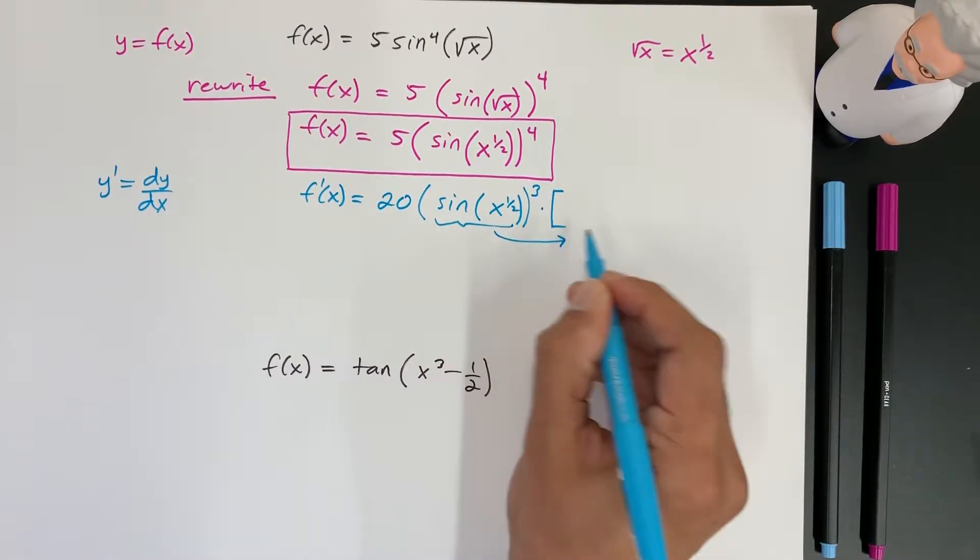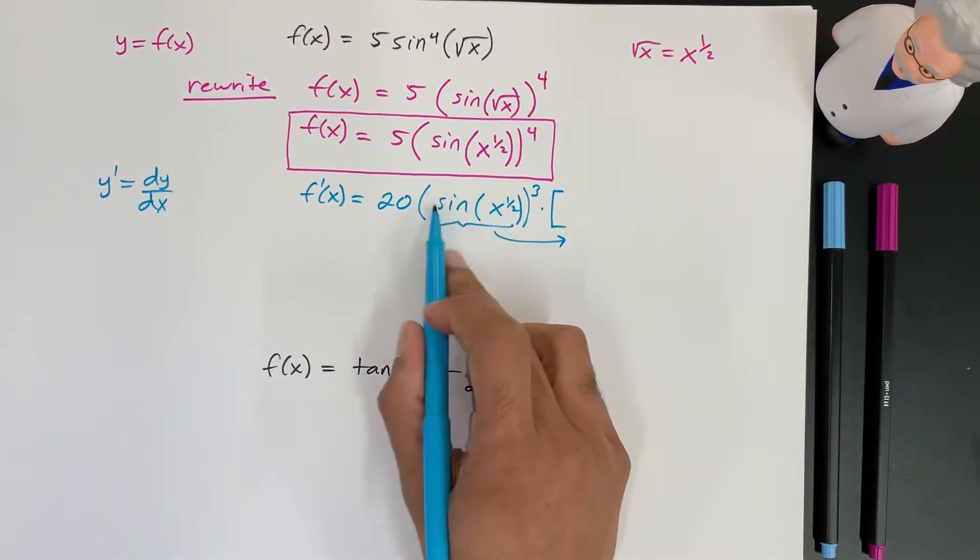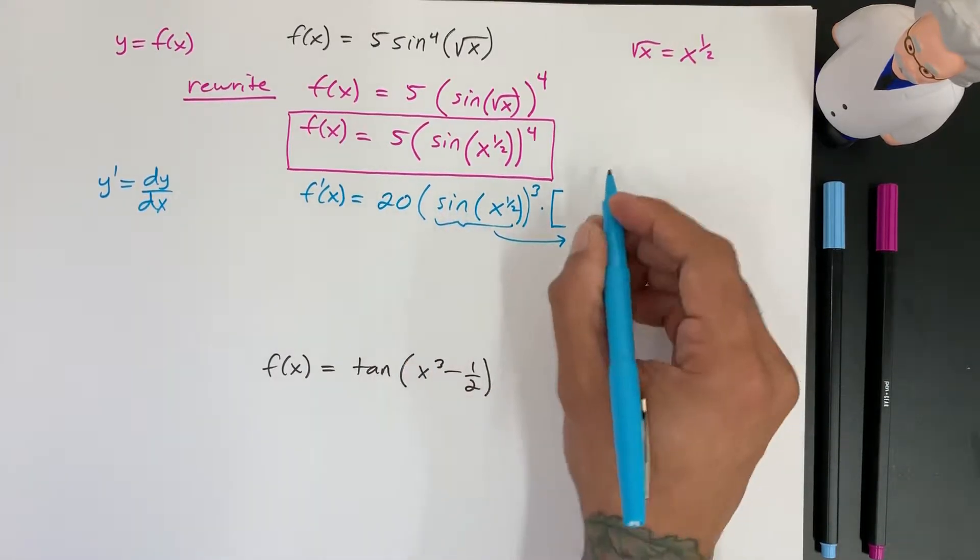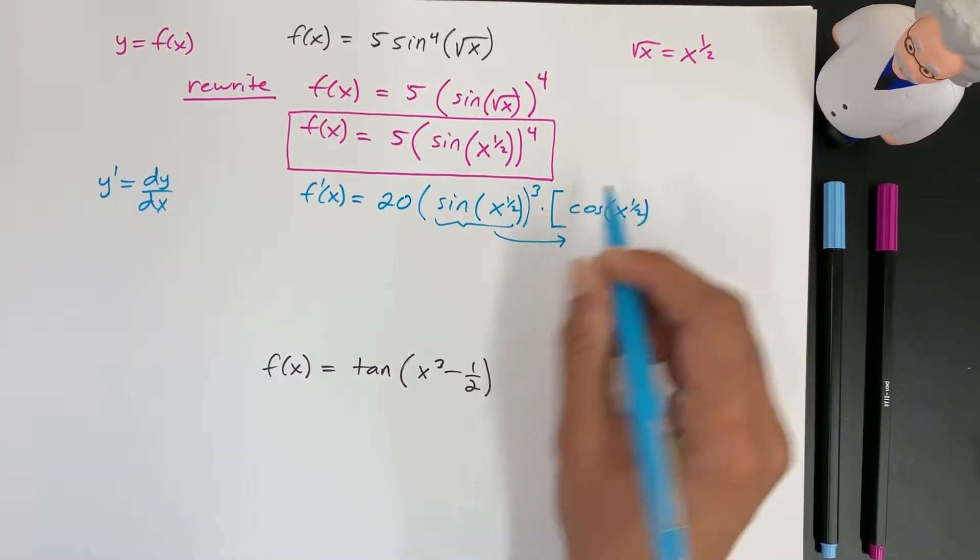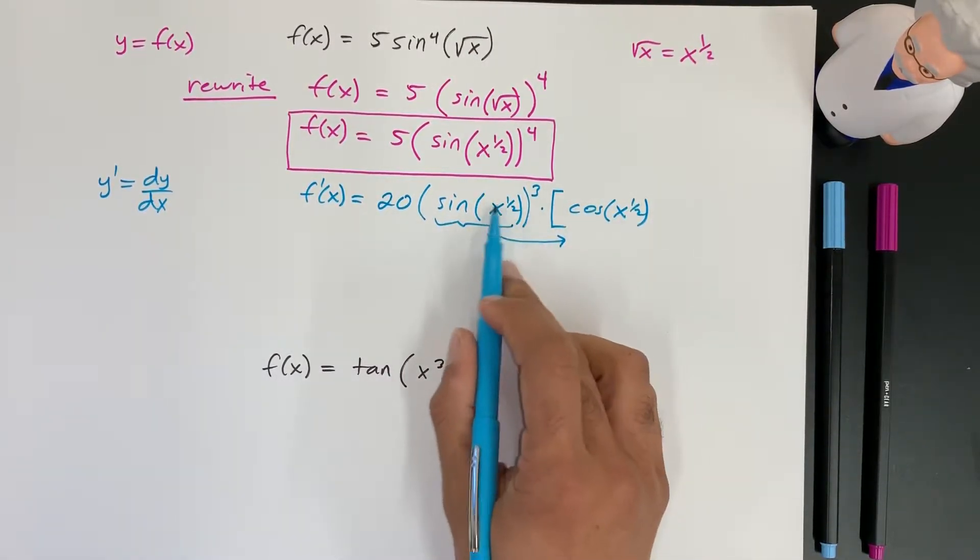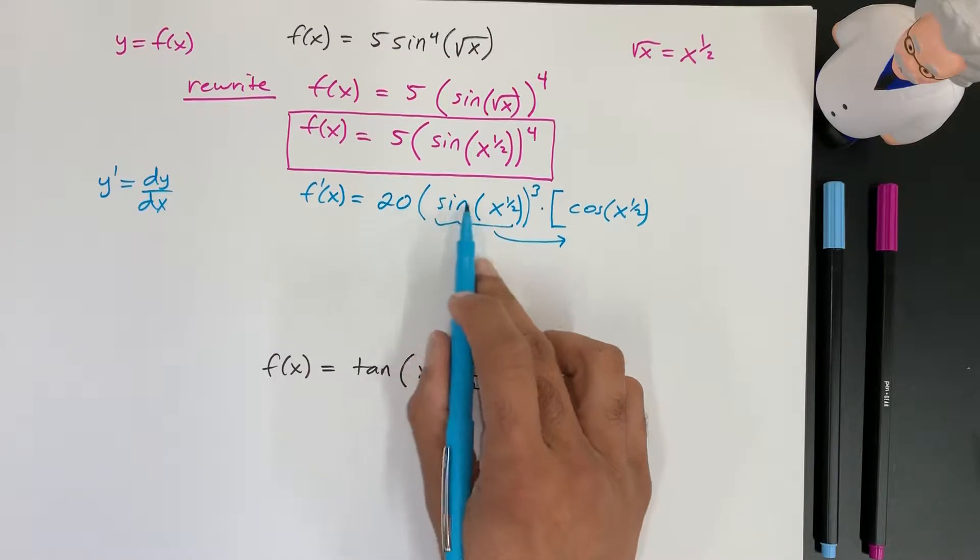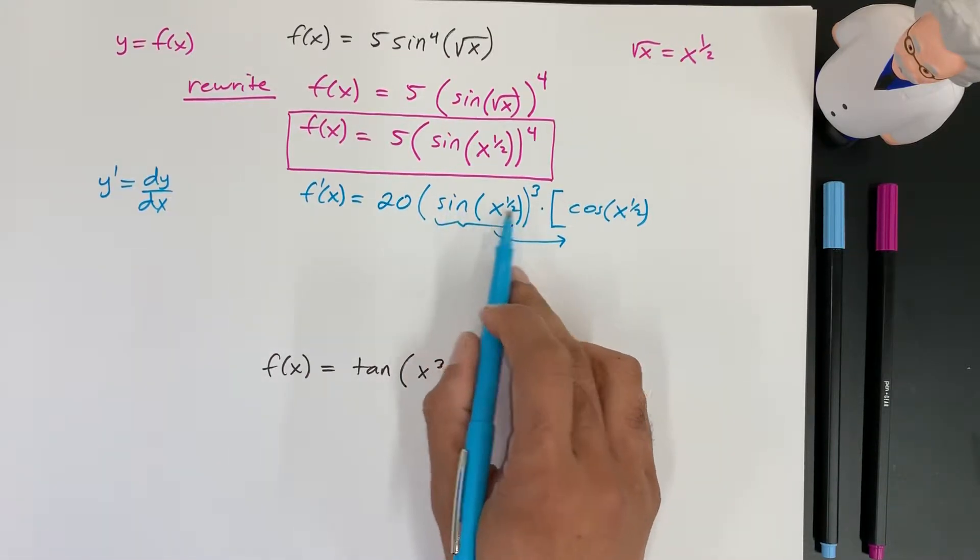And so the derivative of sine is cosine. So we're going to write cosine of x to the 1/2. We leave everything alone, right? We rewrite just the derivative of sine with whatever angle is inside of it.